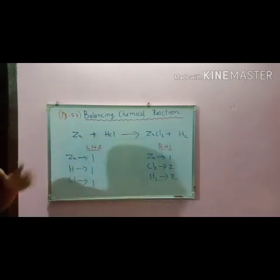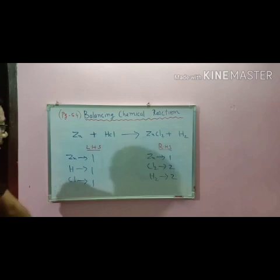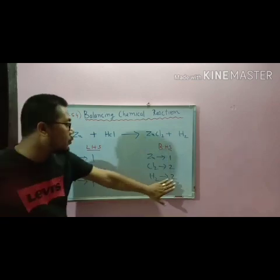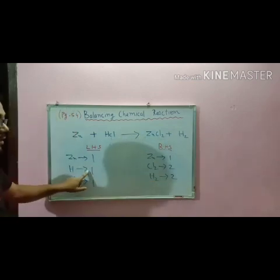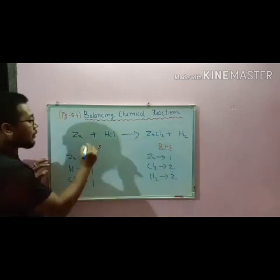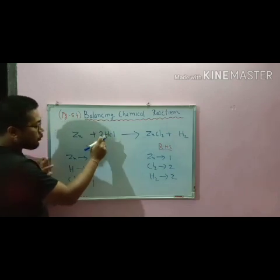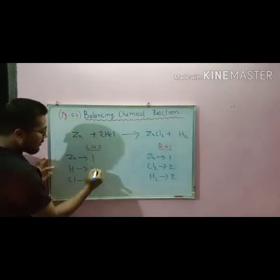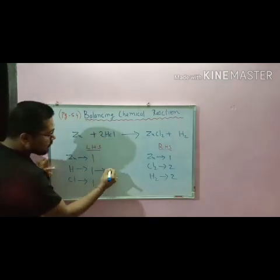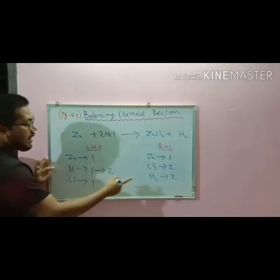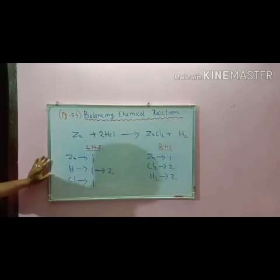First of all, let us see hydrogen. Hydrogen: two on the RHS but only one on the LHS. If we write a coefficient of two on the LHS, two into one will become two. Hydrogen is balanced.